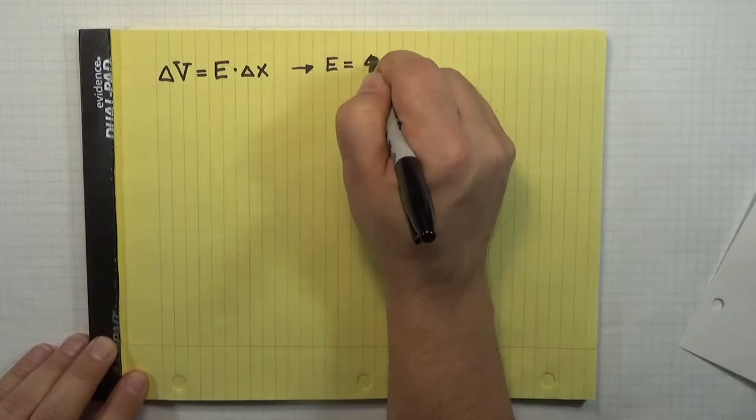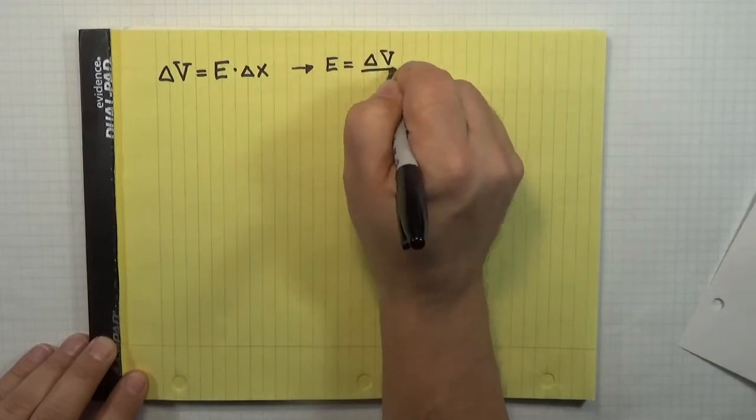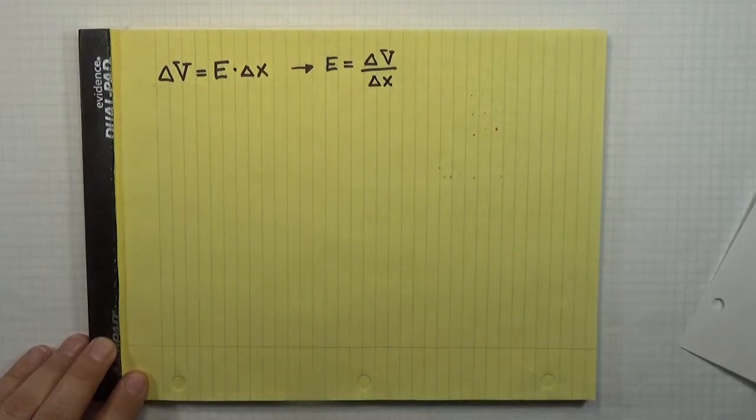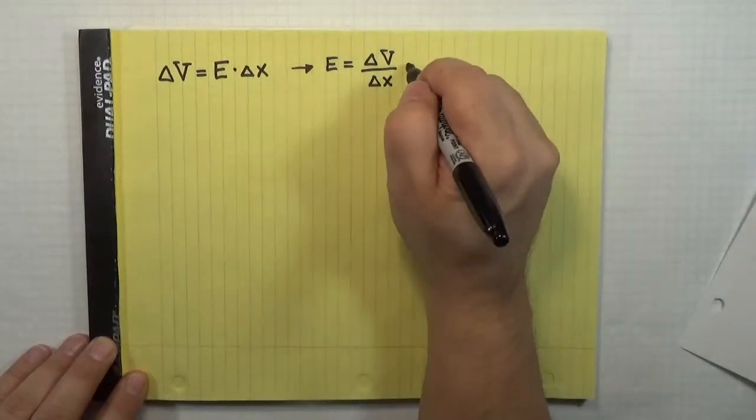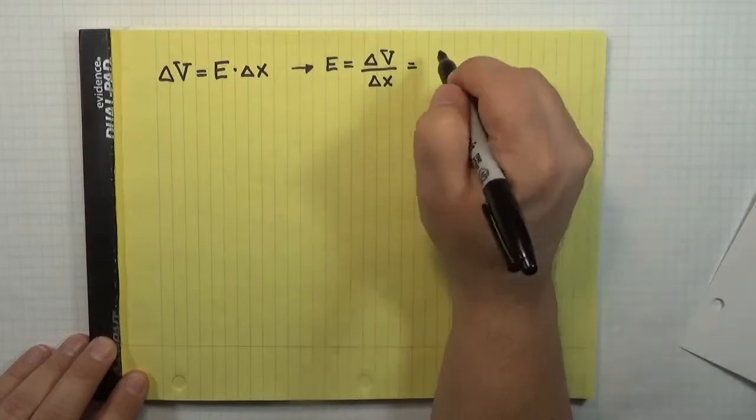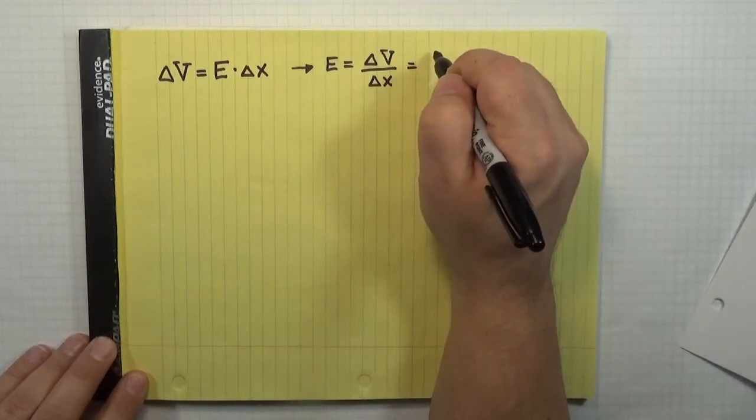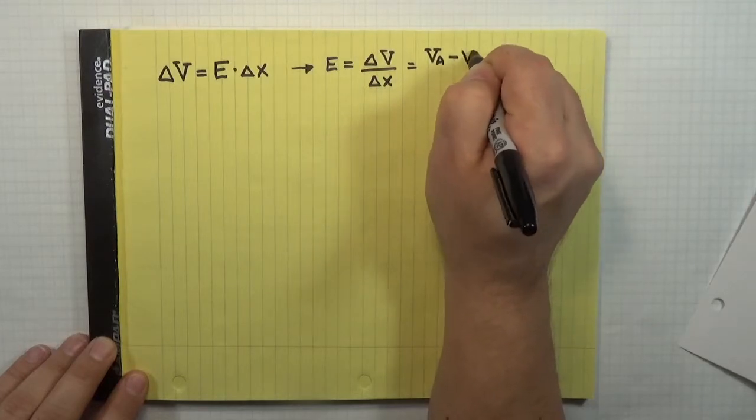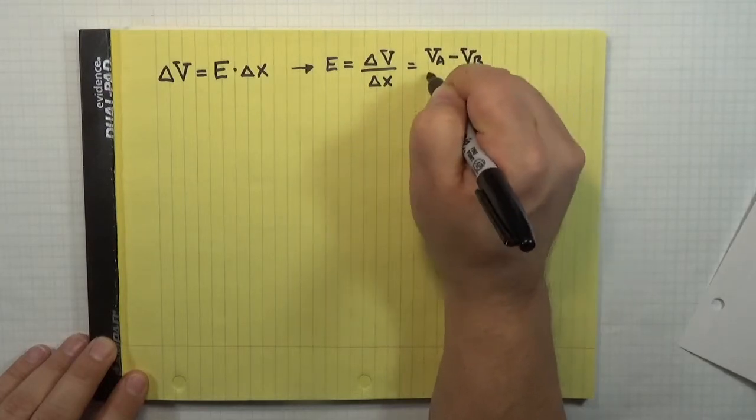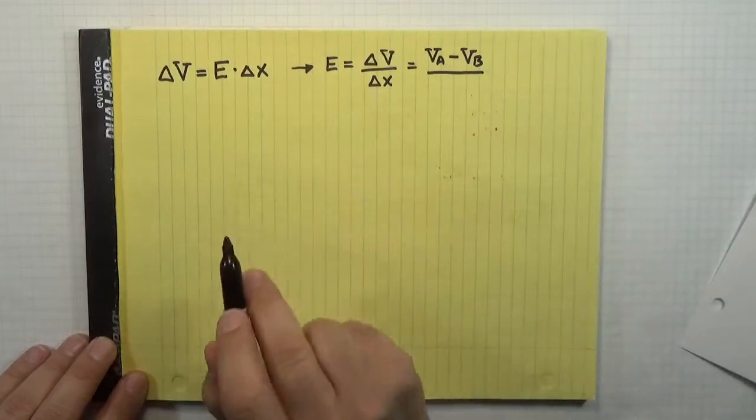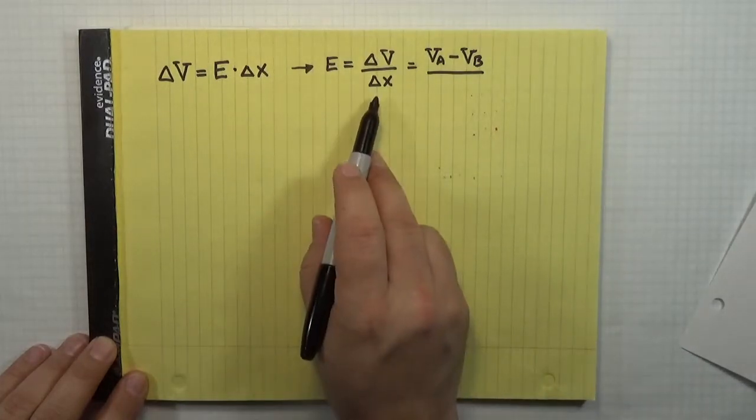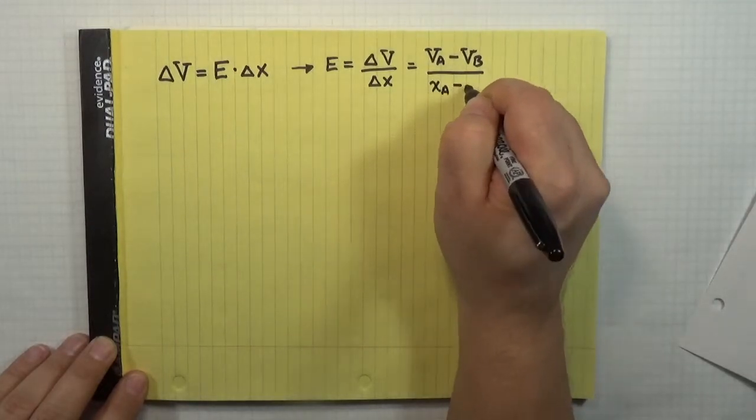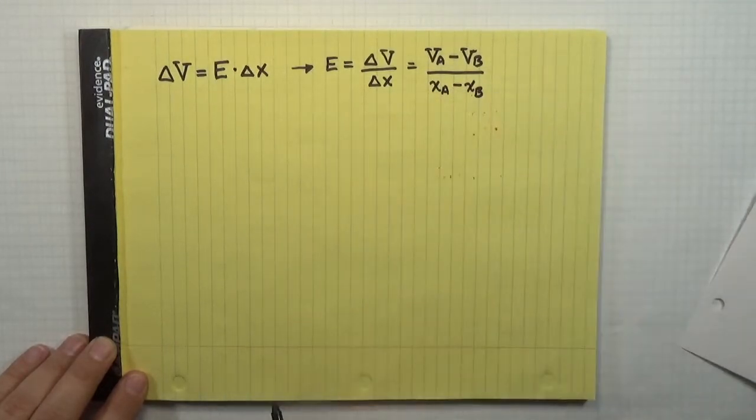The electric field is the change in potential over the displacement. In this case, I could think of this as, let's just pick two of the points. This is the difference in potential between the potential at A minus the potential at B. And so in the denominator, the displacement, the difference in position, is the x position at A minus the x position at B.